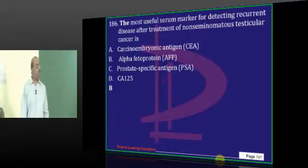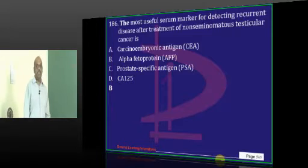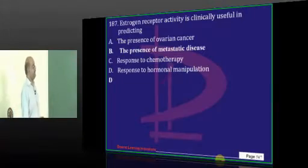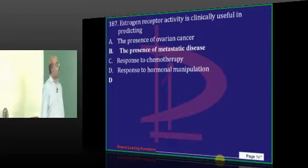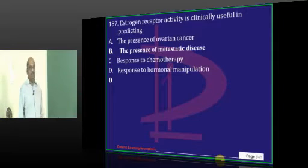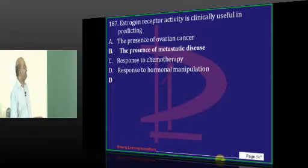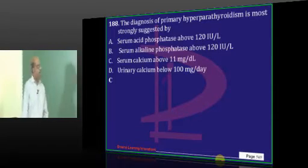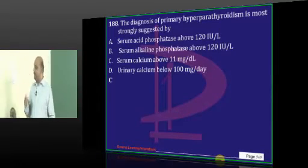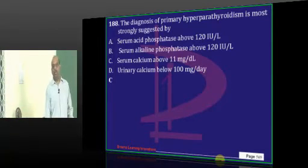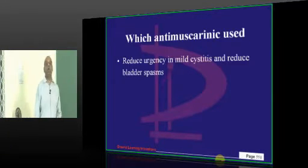To detect non-seminomatous germ cell cancer recurrence, alpha-fetoprotein will help you identify it. Why do you want to know estrogen receptor status? Because if you want to use an anti-estrogen to manipulate the tumor, you need to know the estrogen receptor levels. In primary hyperparathyroidism, serum calcium above 11 mg/dL is considered an important indicator.